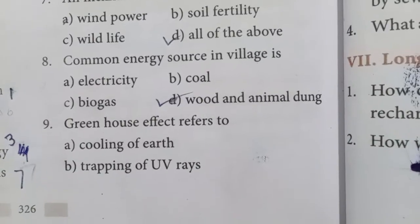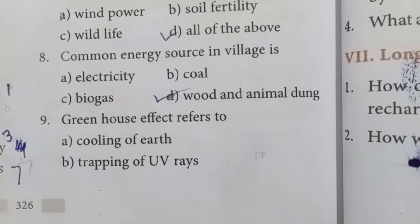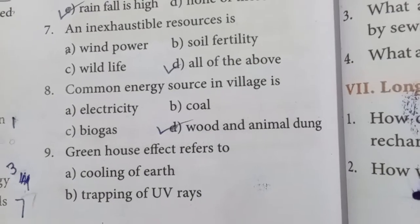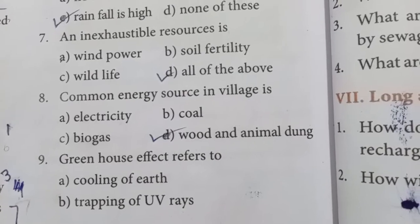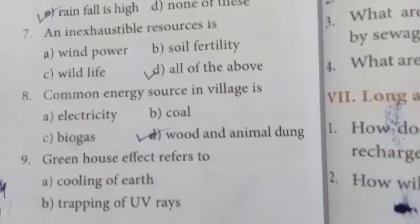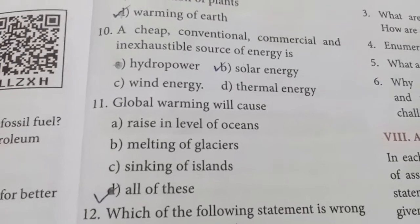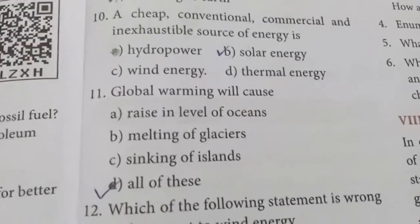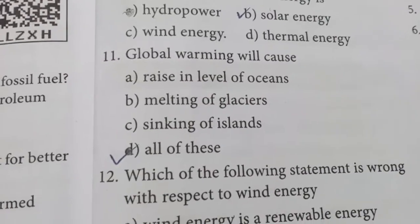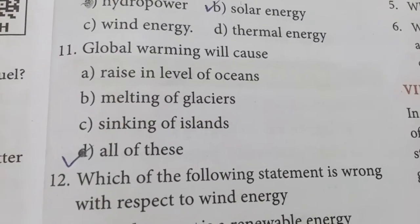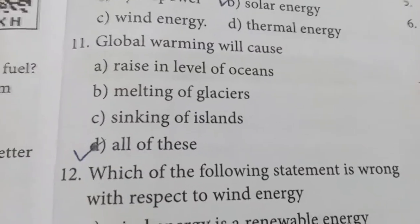Greenhouse effect refers to the warming of the earth — when atmospheric air is polluted by more carbon compounds like carbon monoxide and carbon dioxide, it leads to warming of the earth. A cheap, conventional, commercial, and inexhaustible source of energy is solar energy. Global warming will cause a rise in ocean levels because warming melts glaciers in polar regions like Antarctica and the Arctic.